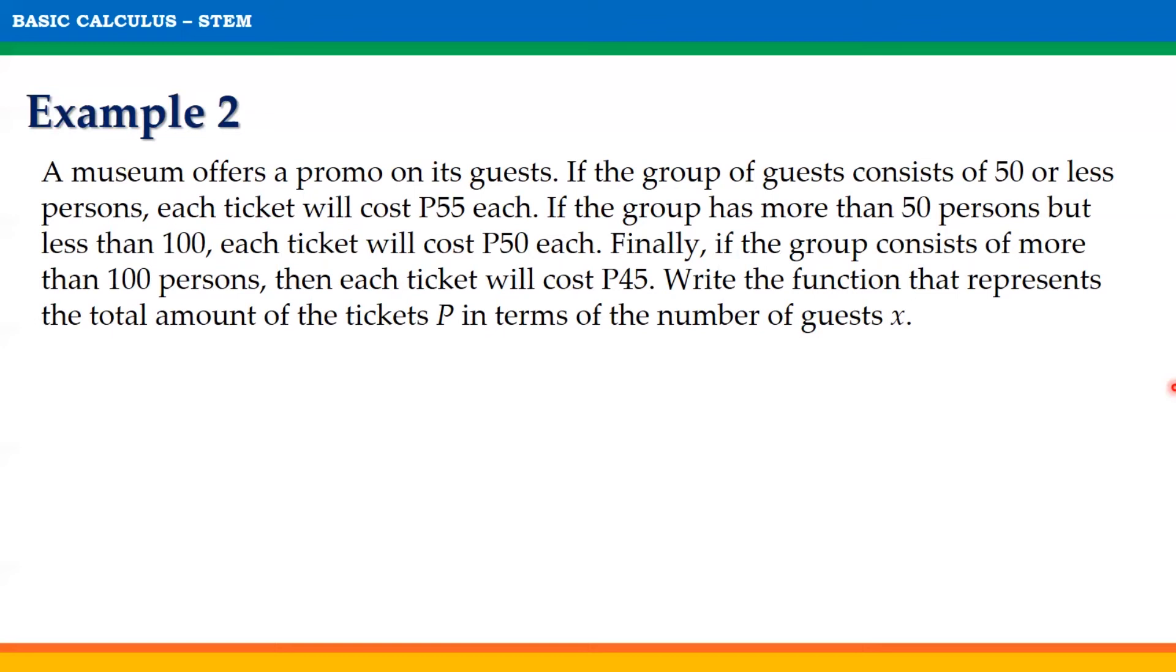Write the function that represents the total amount of the tickets, P, in terms of the number of guests, x. Let x be the number of guests and P be the price of the tickets.